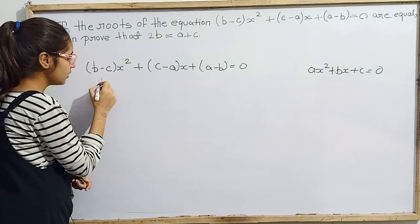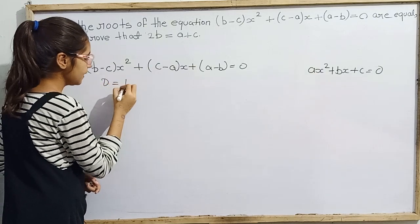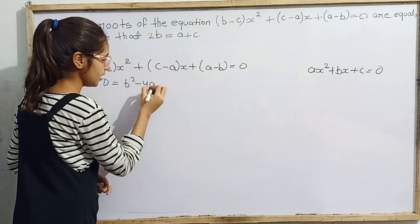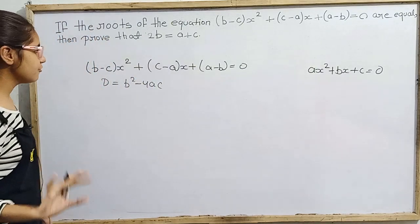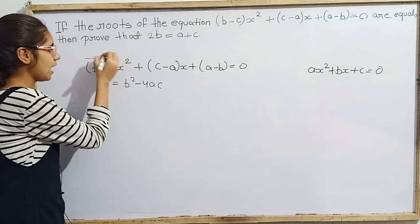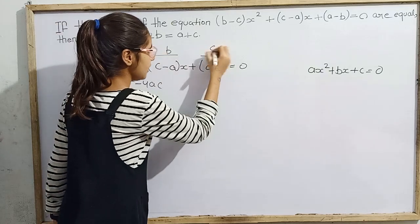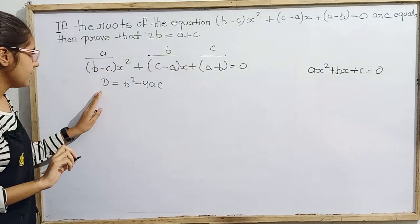That is b minus c x squared plus c minus a x plus a minus b equal 0. Alright now what we have to do? So what is our b? That is c minus a.